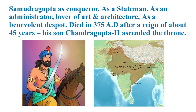Samudragupta was also a lover of art and architecture. He built many artistic and architectural buildings in the Indian subcontinent. Furthermore, Samudragupta was regarded as a benevolent despot. When he attacked some areas or rebellions, he crushed them with an iron hand. However, when a state submitted to him, he forgave them and granted them semi-independence. So this generosity is why he may be regarded as a benevolent despot.